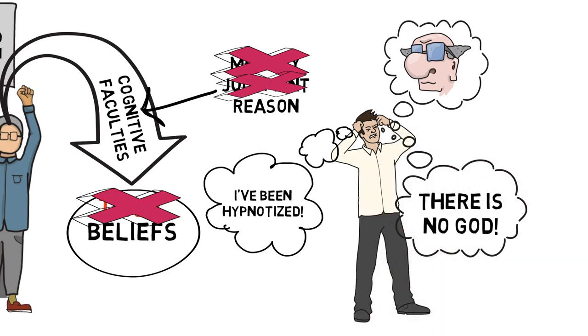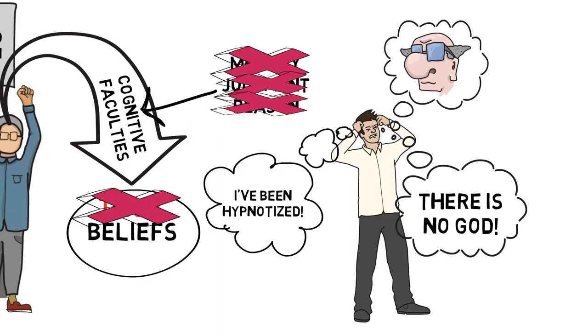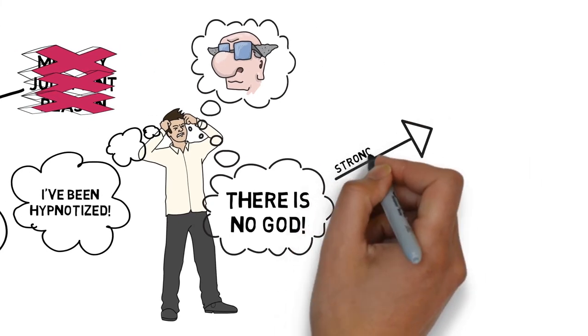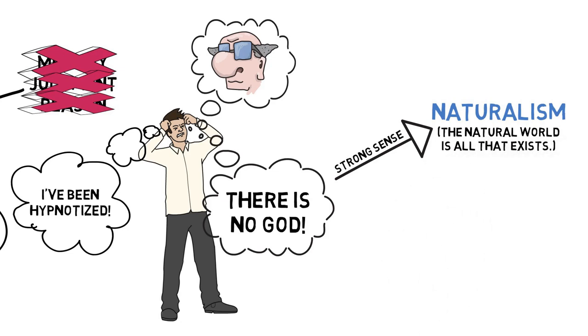Atheism is one of the beliefs that undermine the general reliability of our cognitive faculties. Here I mean atheism in the strong sense of naturalism, the view that the natural world is all that exists. In a softer sense, an atheist could simply reject the god of traditional theism while believing in some lesser deity. But most people who call themselves atheists don't mean that they reject one particular god. They mean that they reject all gods and anything supernatural, leaving them with the natural world.